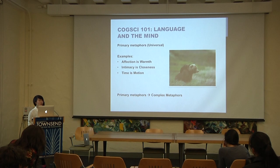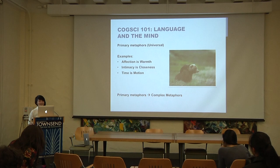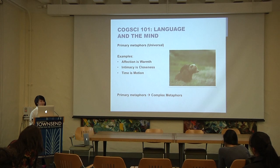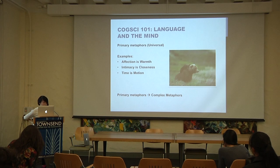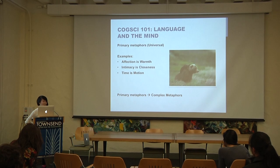This past summer I took CogSci 101: Language and the Mind. The big takeaway is that language shapes thought. One mechanism through which language shapes thought is metaphors. A primary metaphor is something universal and cross-cultural — for instance, affection is warmth. If you say somebody is warm versus cold, you're employing a primary metaphor. We use metaphors so much in our thinking that we're largely unconscious of the way they affect us. Another metaphor is that time is motion — when people talk about the future, they gesticulate to the right, and the past, to the left.